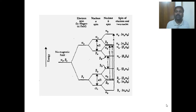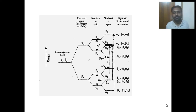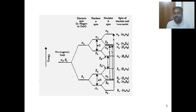For an electron interacting with two equivalent nuclei of I equal to half, applying the formula 2NI plus 1 with N equal to 2: 2 times 2 times half plus 1 - the 2s cancel, giving 2 plus 1 equal to 3 lines. This confirms the energy level analysis. The degeneracy of energy levels in equivalent nuclei interactions reduces the number of observable lines compared to non-equivalent nuclei.